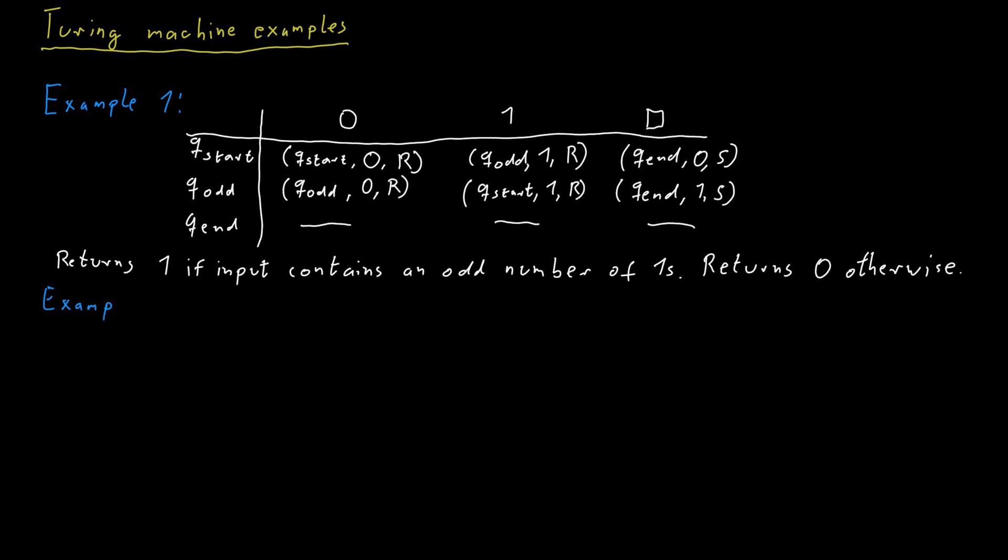Here's another example of a Turing machine using three internal states and the standard tape alphabet. From the state q_start, if we read a 0, we switch to state q_ref, and we write a 1 and we move the head one cell to the left.